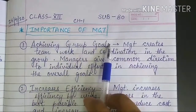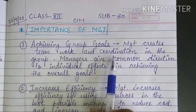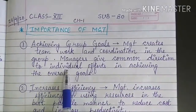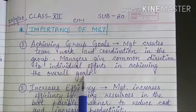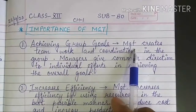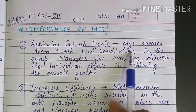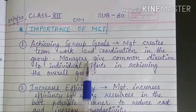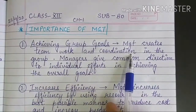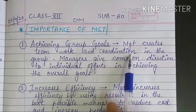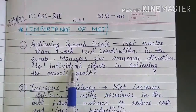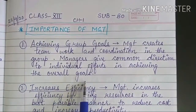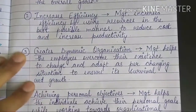The first importance is achieving group goals. Management creates teamwork and coordination in the group. Managers give common direction to the individual efforts. For achieving the goal of an organization, management creates a team of individuals, coordinates all their efforts, and gives them a common direction to achieve the overall objective of an organization.